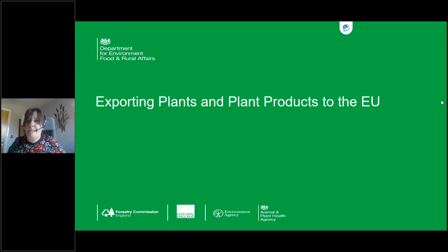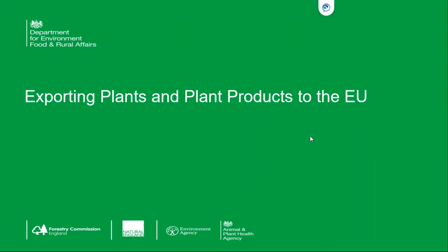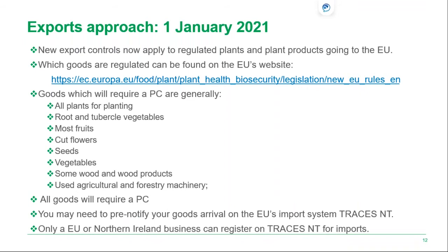Unlike imports where there was a phased introduction of controls, for exports to the EU there was a hard start from 1st January — any plants or plant products regulated by the EU need a phytosanitary certificate. The main commodity groups requiring a PC include fruit, veg, plants for planting, etc. If you are exporting goods to the EU, you will need to do pre-notification on the EU's import system known as Traces NT, but as a GB operator you will be unable to register for this yourself — only the EU importer or a customs agent acting on their behalf can do so.